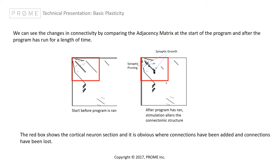Here we contrast the before and after adjacency matrix. In the red box on both images are the connections between the cortical neurons. Comparing the start adjacency matrix to what the connections look like after the program has run, we can see numerous connections gone and numerous connections added. This is plasticity.